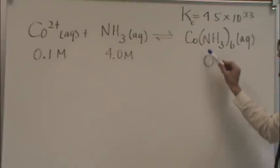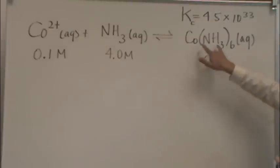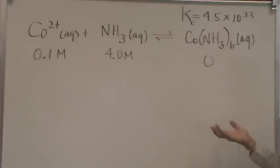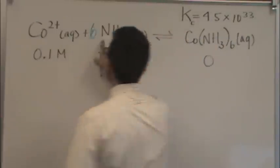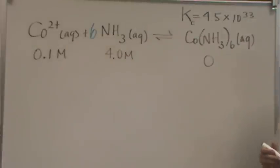So let's take a look at this example: cobalt 2 plus, plus ammonia goes to a cobalt complex with 6 ammonias on it. Now first of all, you want to ask yourself, well, does anything look weird? There should be because you want to make sure you balance this. So there should be 6 ammonias right there.